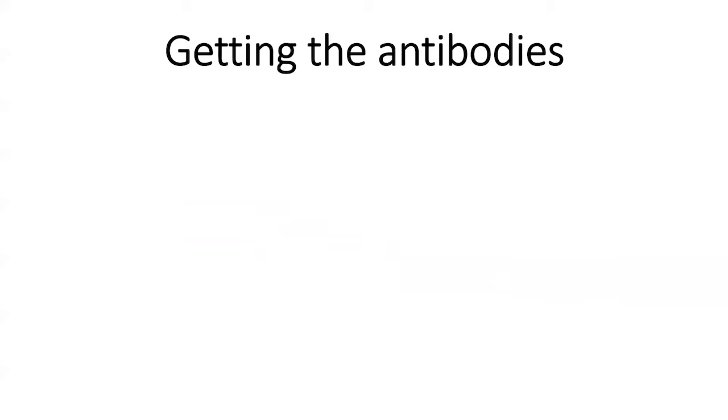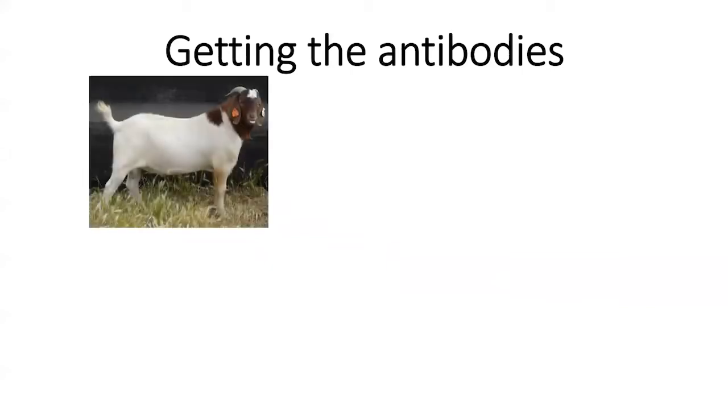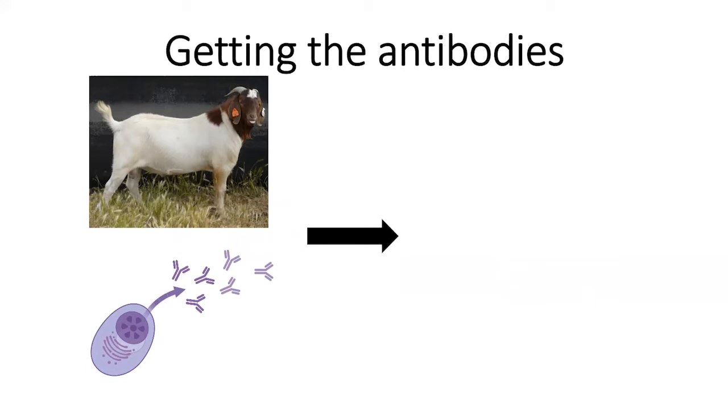So then how do we get it out of the goat? Well, the goat will start producing the antibodies against this foreign target, and we can extract some of the blood, certainly not all of it, just some of it. And then after purifying out the immune fraction of the blood, and then the antibodies out of the blood, they can get their goat antibody.